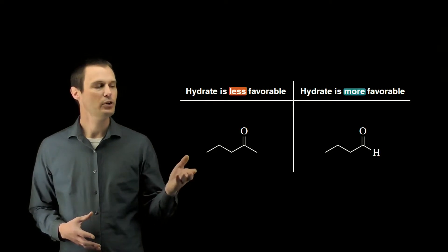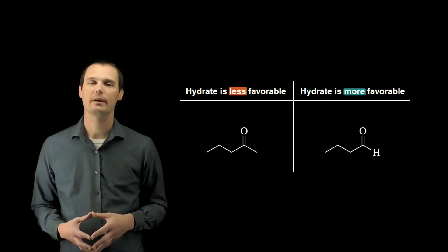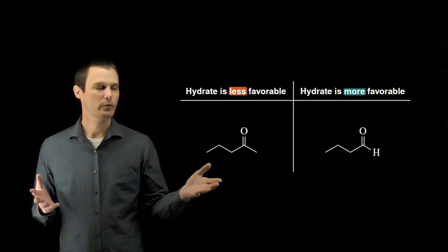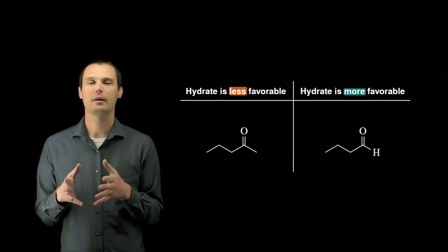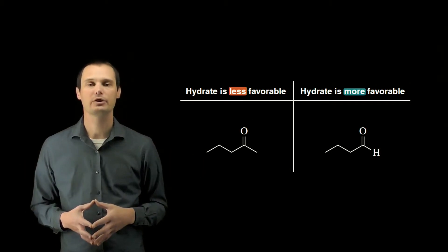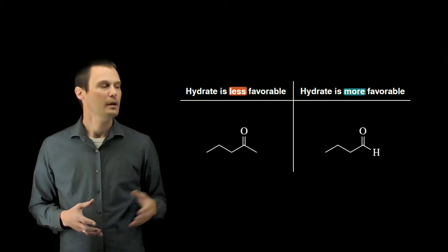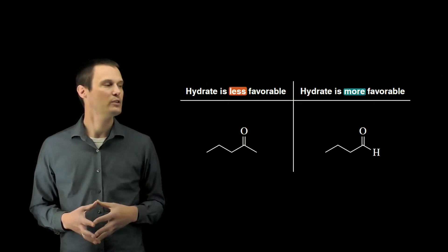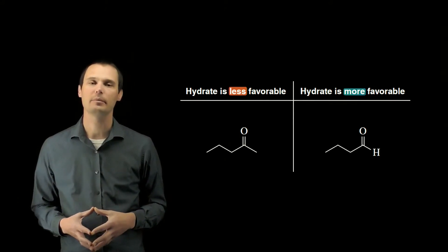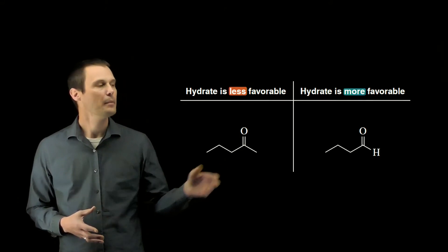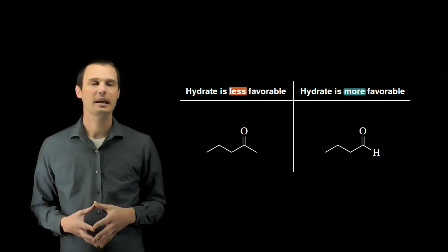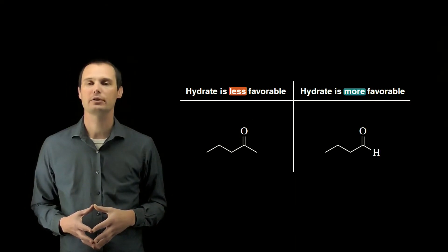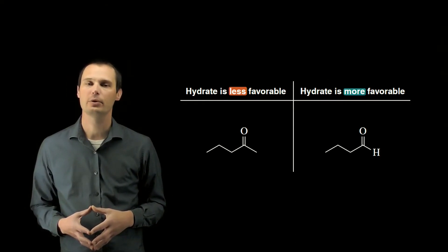A ketone has two alkyl groups on either side of the carbonyl. Both of those alkyl groups serve to stabilize the carbonyl through hyperconjugation. The aldehyde only has one alkyl group that can stabilize the carbonyl through hyperconjugation, meaning the aldehyde carbonyl is less stable and more electrophilic than a ketone carbonyl.